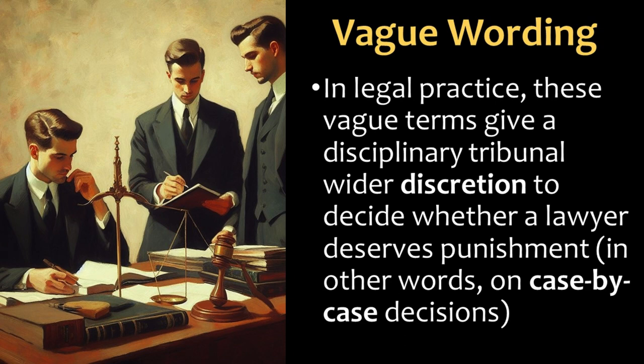In legal practice, though, vague terms give a disciplinary tribunal wider discretion to decide whether a lawyer deserves punishment. In other words, they can make case-by-case decisions considering the totality of the circumstances. They can consider all the evidence and factors to decide if the lawyer acted reasonably, for example, under the circumstances.